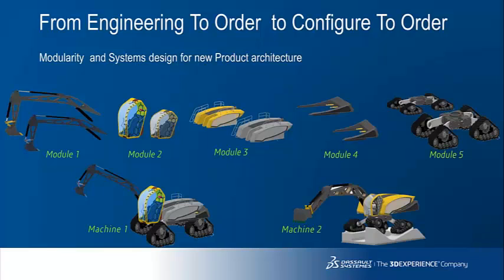Engineering to order is today's answer to providing the end customer with customised equipment. In a long-term vision, the ultimate goal is to reduce as much as possible the demands on engineering and to create specific configurations by combining predefined modules. This configured-to-order methodology is the foundation on which companies can base the analysis of their full product cycle. This means modules are defined not only based on engineering needs, but can be driven by maintainability requirements or cost efficiencies — the methodology of the future in answer to highly variable demands.